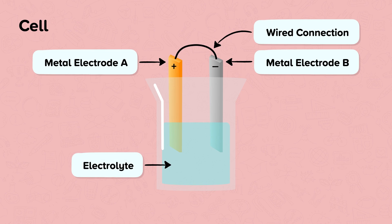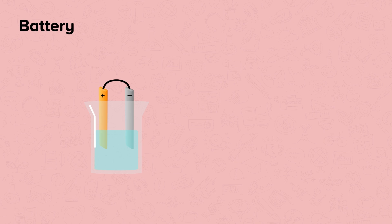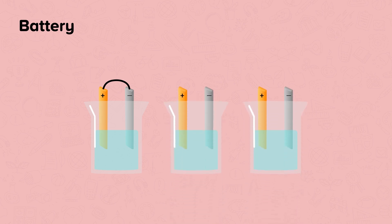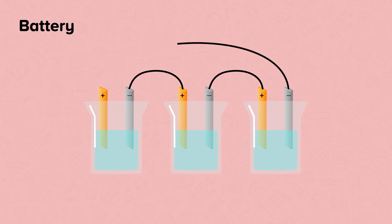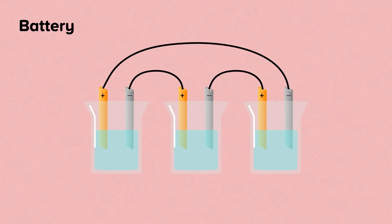Batteries are made using cells. Batteries consist of two or more cells connected together in series. You can see that these cells are connected in series because the conducting components of a cell form a continuous loop. Batteries are useful because the potential difference of a battery is larger than the potential difference of individual cells.